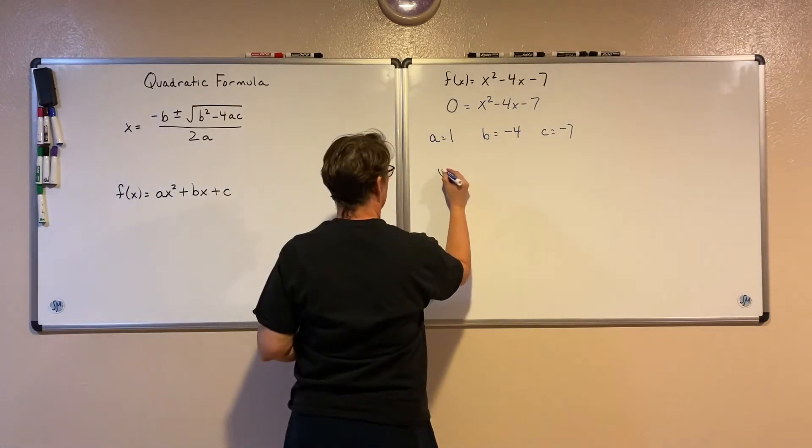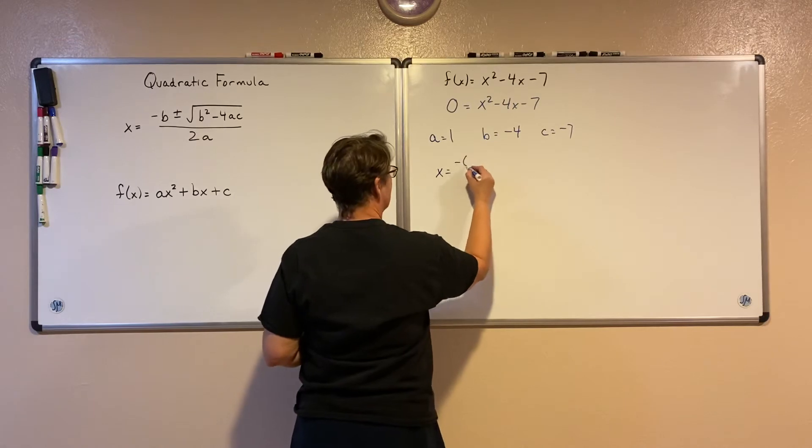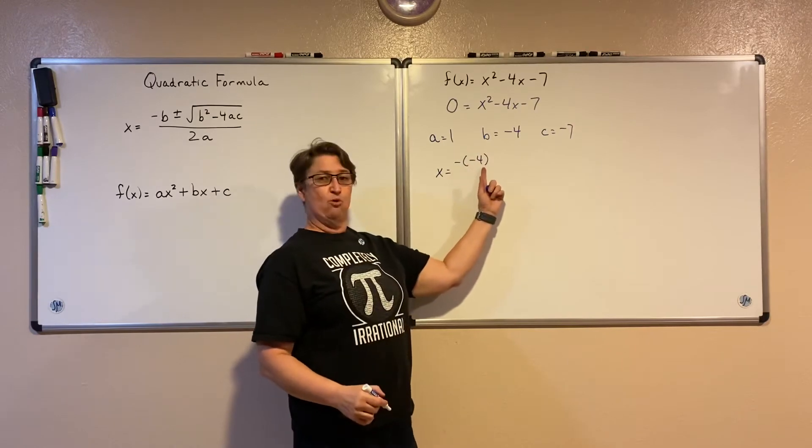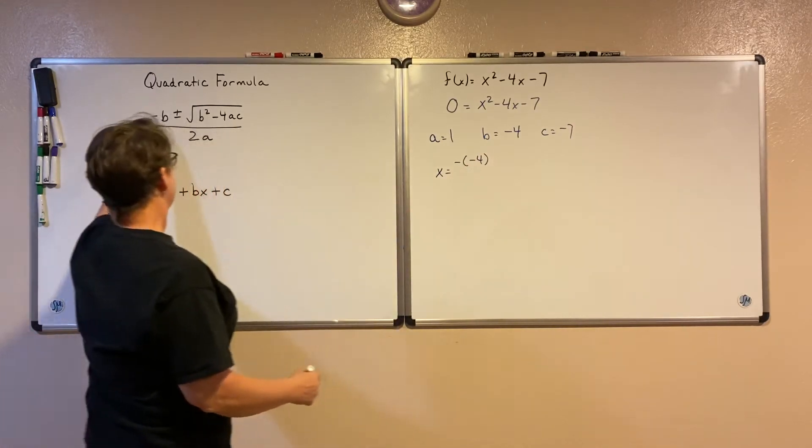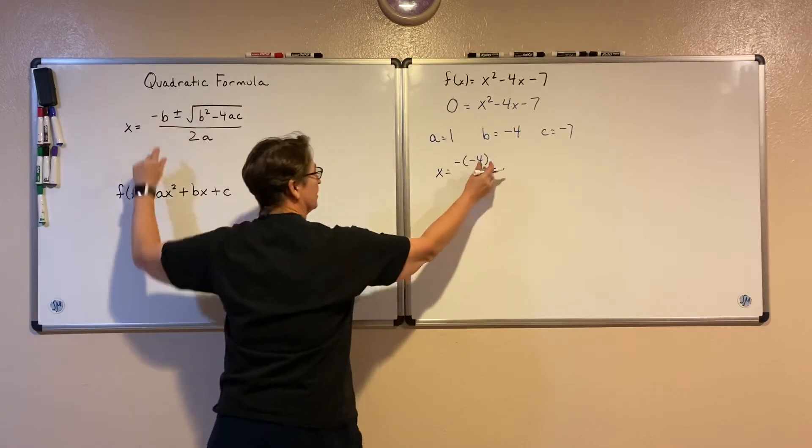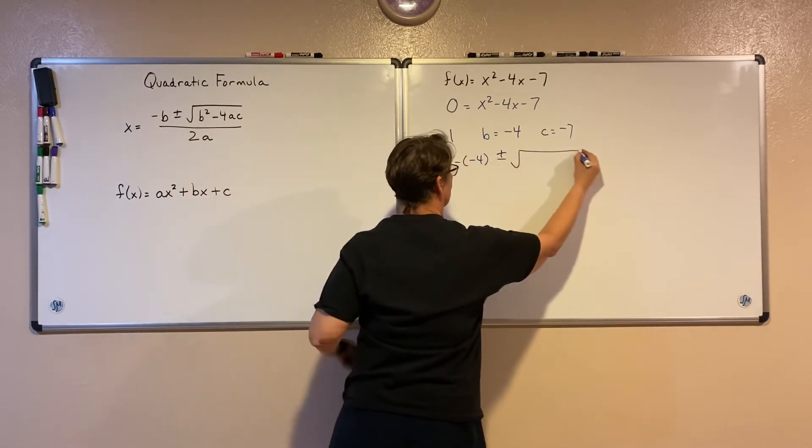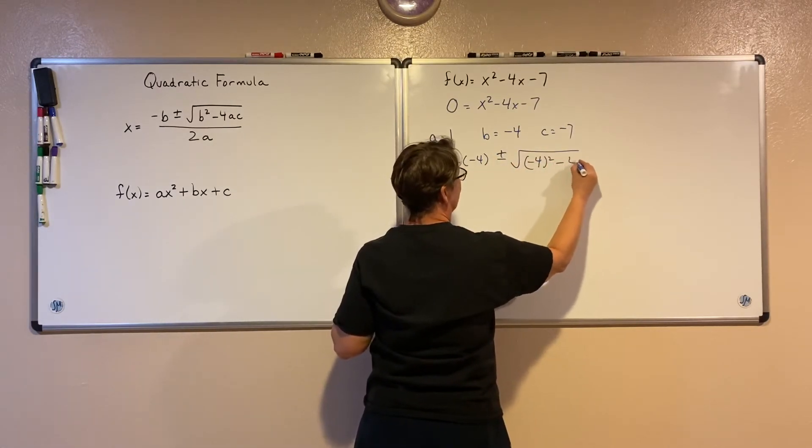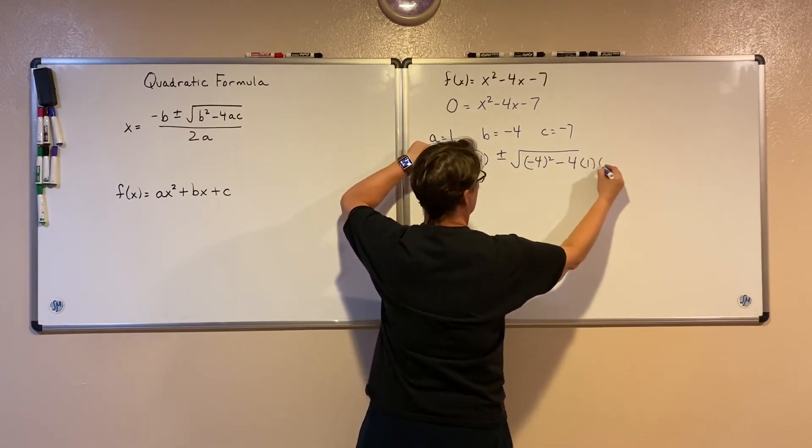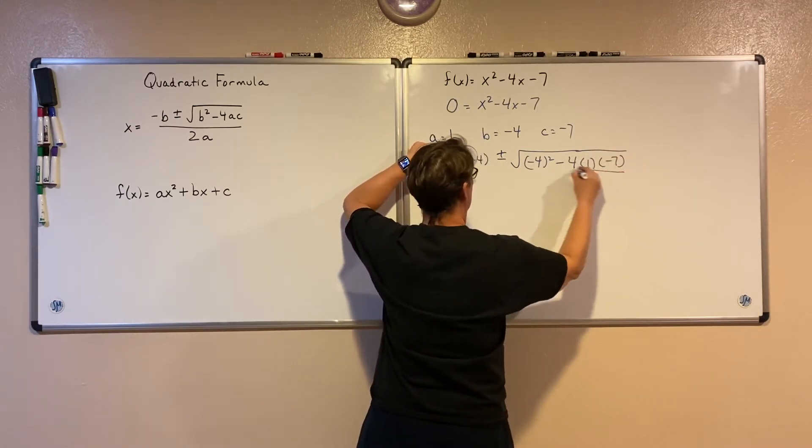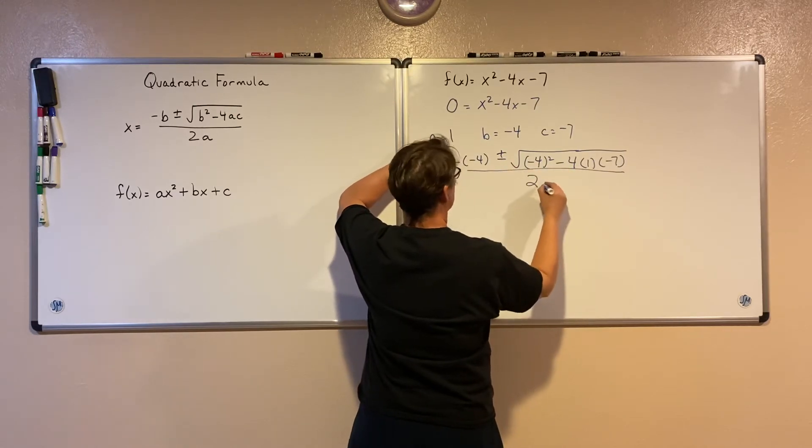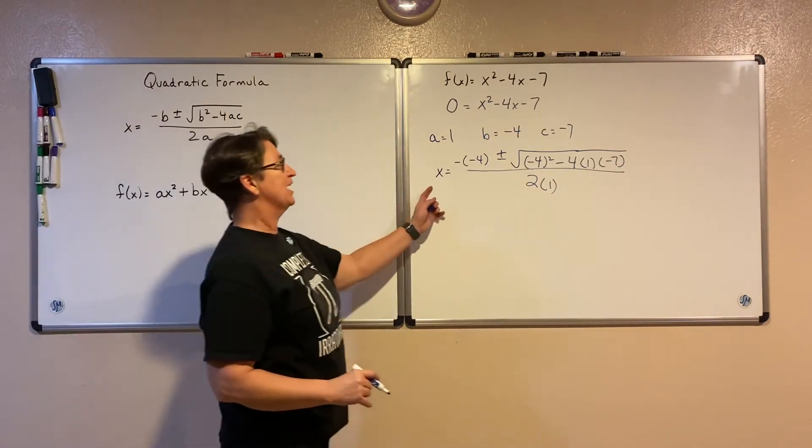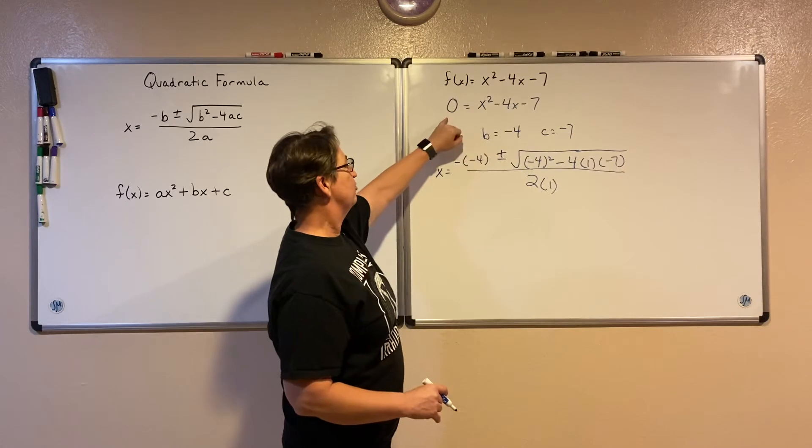Now all I do is take those values and substitute them into my formula. So I have x equals negative b. Notice that it's a negative of that negative 4, the negative of my b, plus or minus the square root of b squared minus 4 times a times c all over 2a.